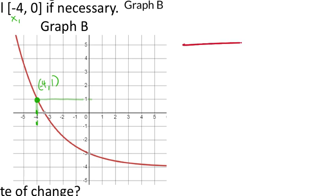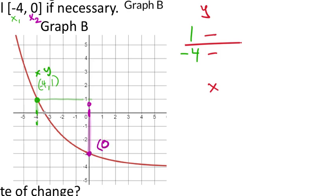The second x-value from the interval is 0, which is on the y-axis. I follow that line down to the graph and end up at this location. The x-value is 0, and the corresponding y-value showing is negative 3. So x = 0 goes on the bottom, y = negative 3 goes on the top.